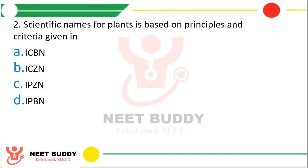Question 2. Scientific names for plants are based on principles and criteria given in ICBN. The correct answer is Option A, ICBN.